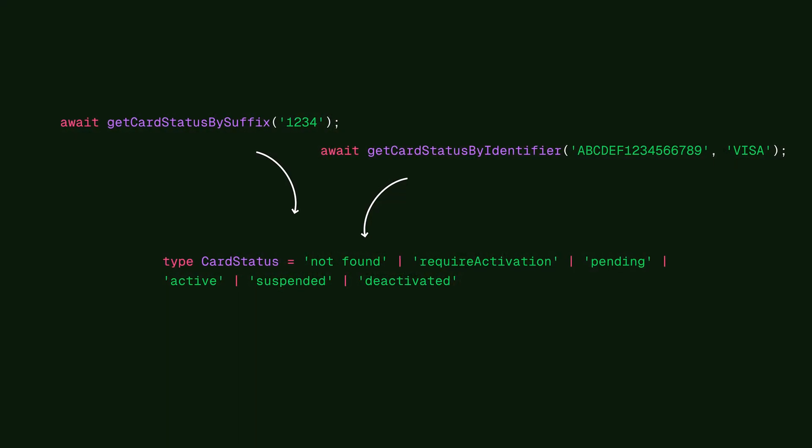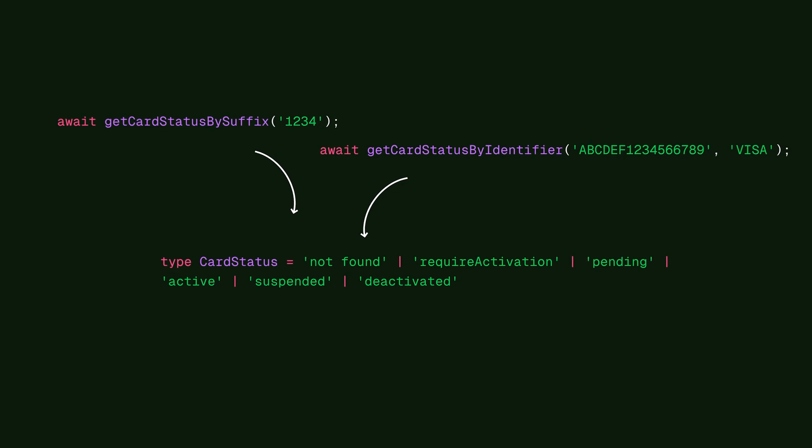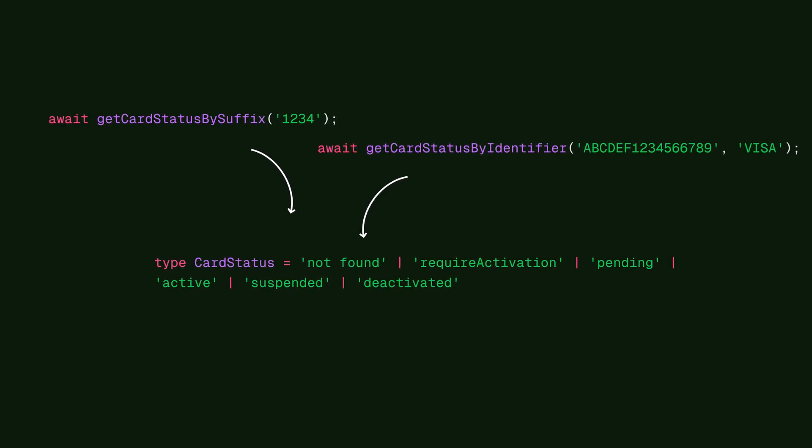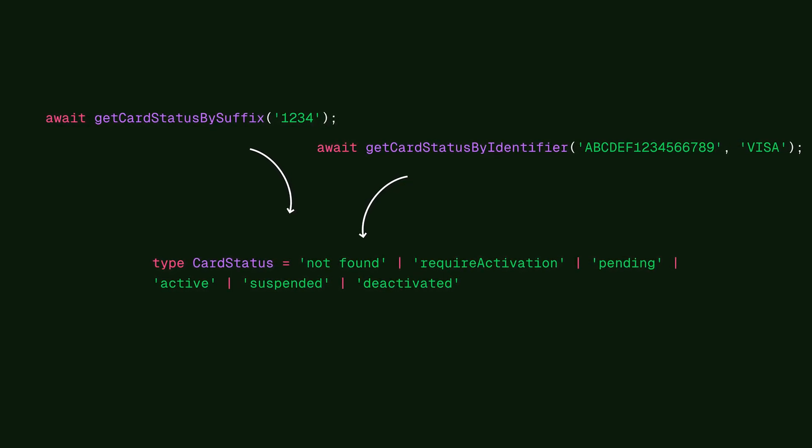When the push provisioning flow is complete, it's important to verify that the card was added successfully. And of course, the React Native Wallet library can help with that too. There are two functions available to check the status of the card. Depending on your use case, you can choose to use either a unique card identifier token or the last four digits of the card number.